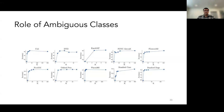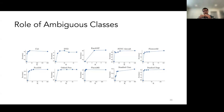We also study how important ambiguous classes are by running FOOD with different values of K — describing differences between the top 5, 10, 20 most ambiguous classes, and so on. The bulk of performance improvement comes from describing the five most ambiguous classes, with diminishing gains beyond that. So we can use FOOD with just the top five or ten most ambiguous classes, lowering computational cost while retaining good performance.